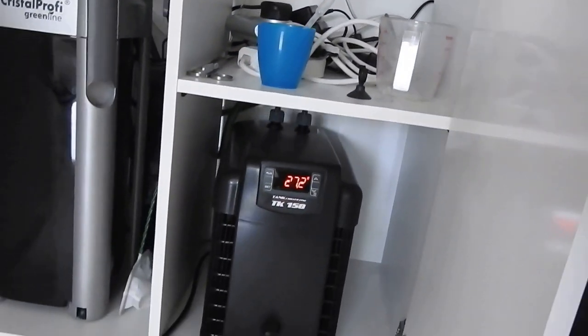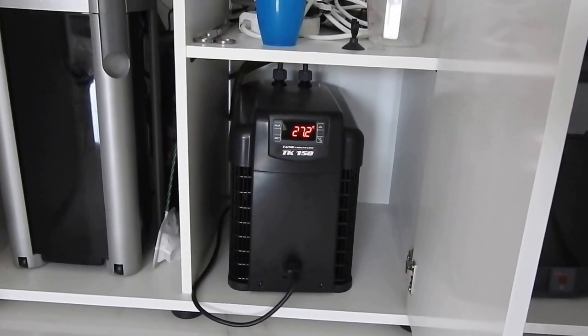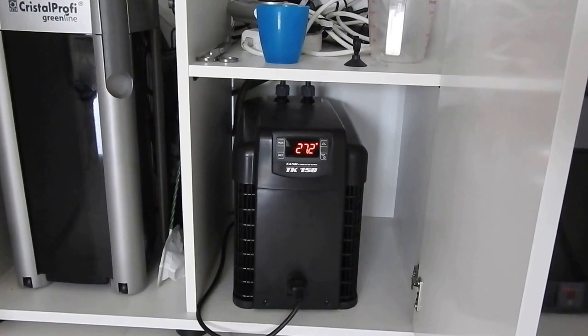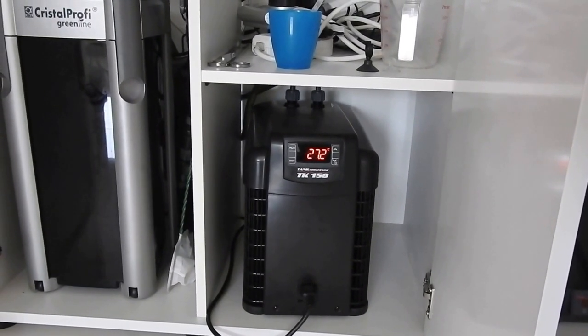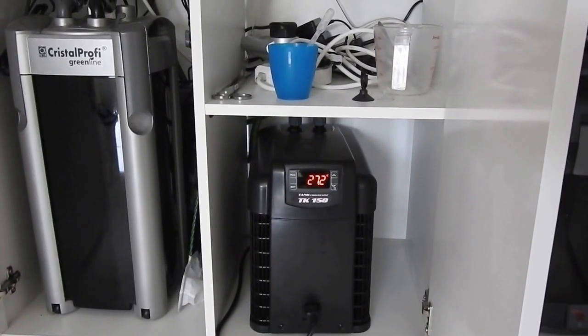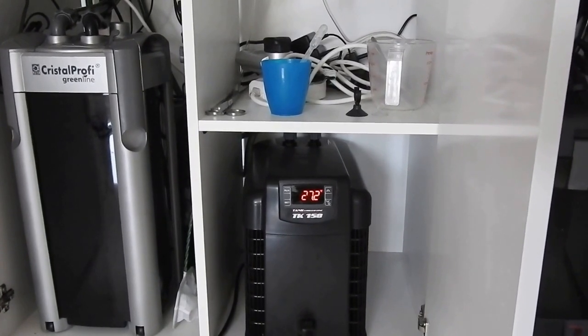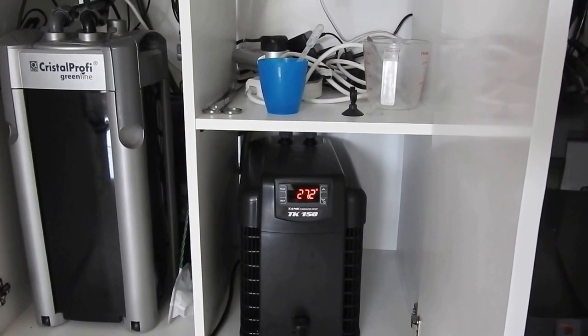In the middle it's a techo chiller to keep the temperature lower. It's quite hot here in Dubai even though the AC is running to about 26 degrees C inside the house. All the lights just heat up everything.